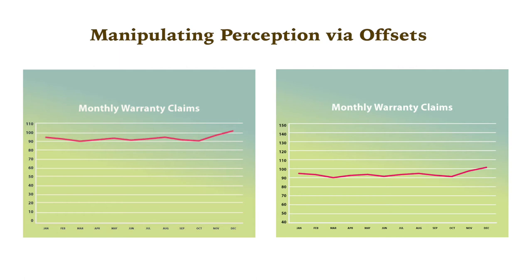This question of offsets can arise whenever you have data values that start well above zero. To make the best choice for every graph, consider the two ethical tests: what is your intent, and what effect will the choice have on the audience? There are times when it is in the audience's interest to start the vertical axis somewhere other than zero — such as when variations among data points are more important than absolute values. In those cases, make sure to note that the axis doesn't start at zero, either with a label on the graph or in the caption.